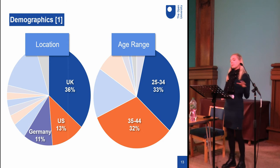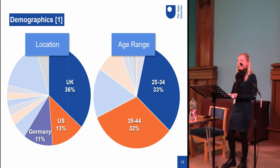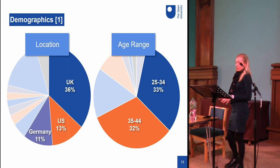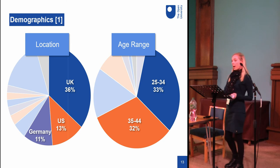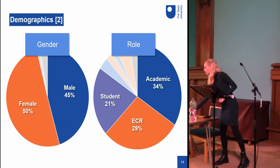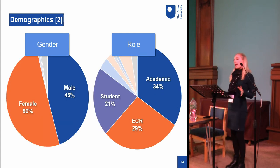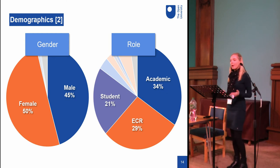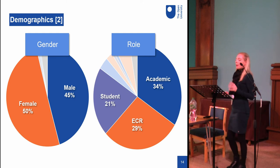To put the results in context, here's a brief overview of participant demographics. The 212 participants were located in 32 different countries, with the majority in the UK, the US, and Germany. About two-thirds were aged between 25 and 44. The split between male and female participants is almost equal, with slightly more women than men — unsurprising as women are statistically more likely to take part in online surveys — and a very small minority chose not to answer or to self-describe their gender.